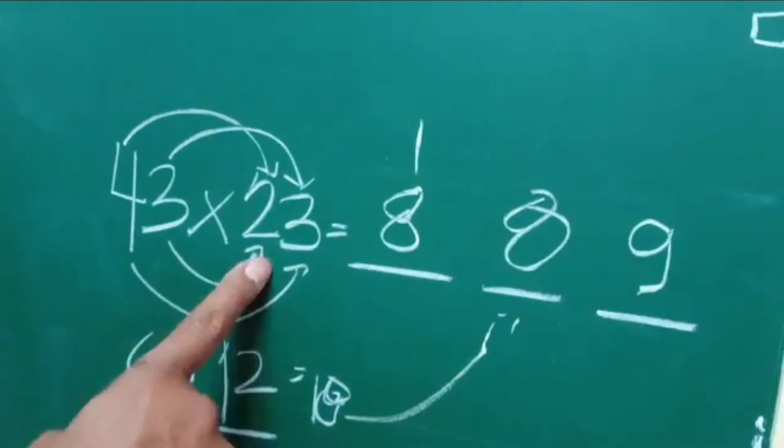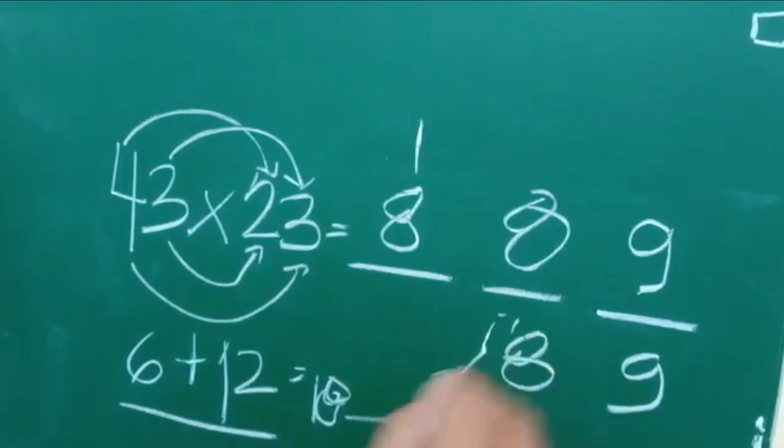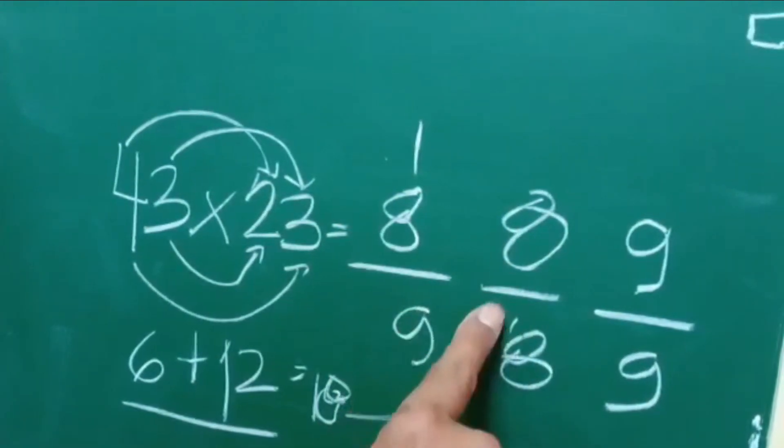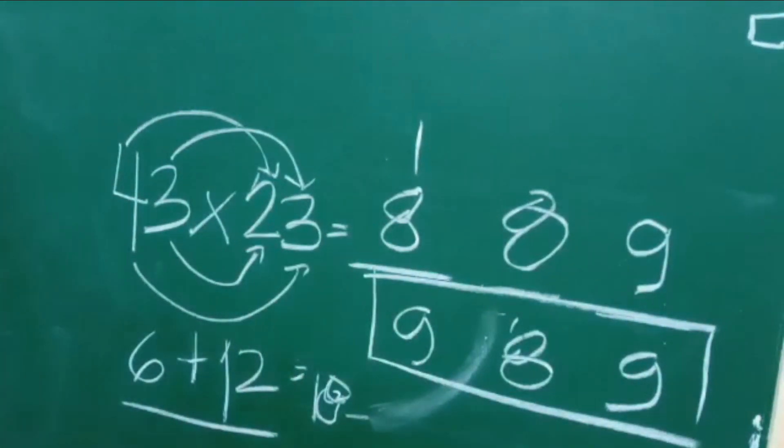Now the product of 43 multiplied by 23 is equal to 9, 8, 1 plus 8 is equal to 9, so the answer is 989.